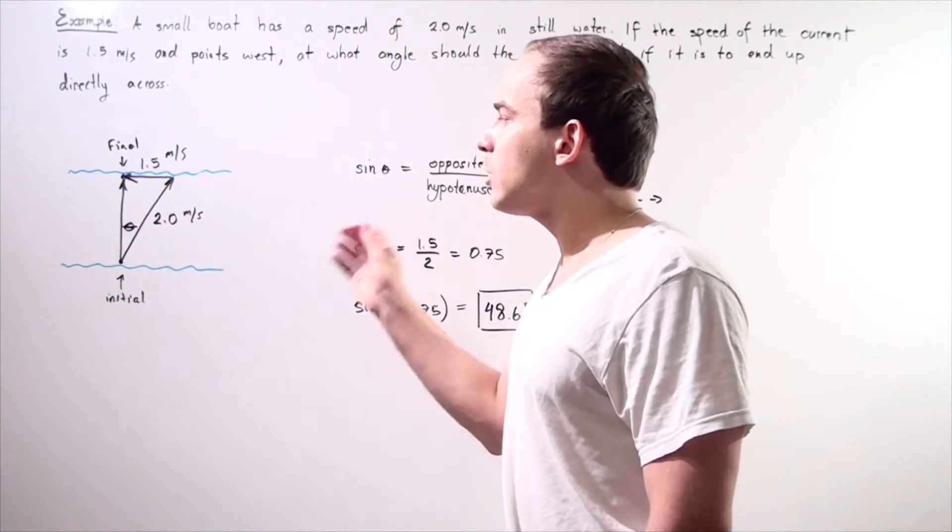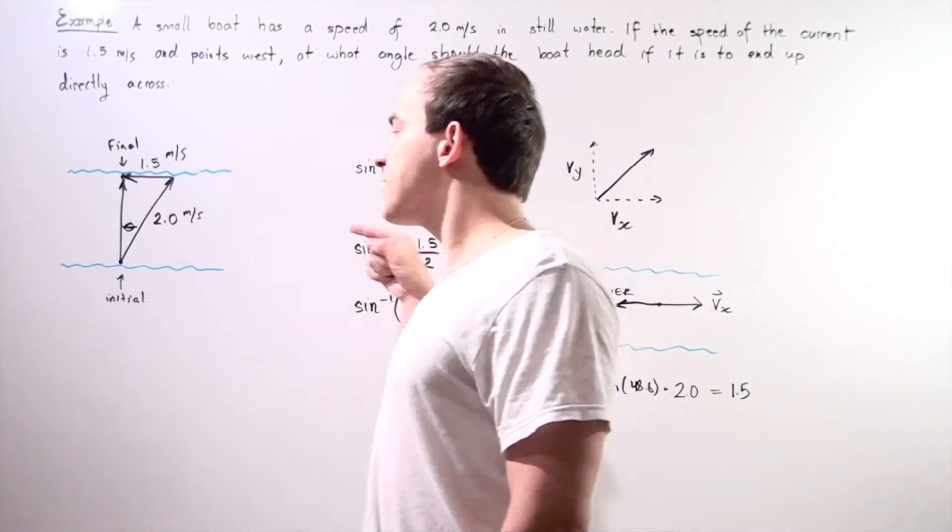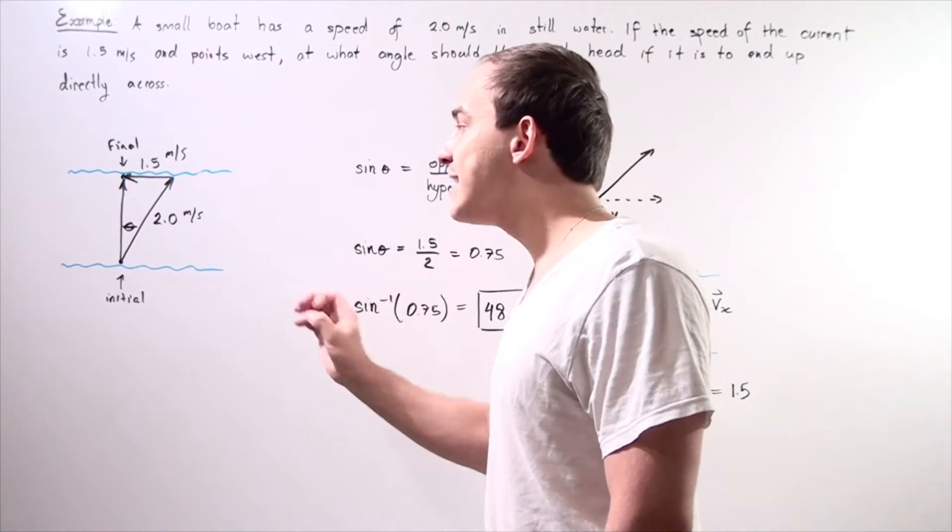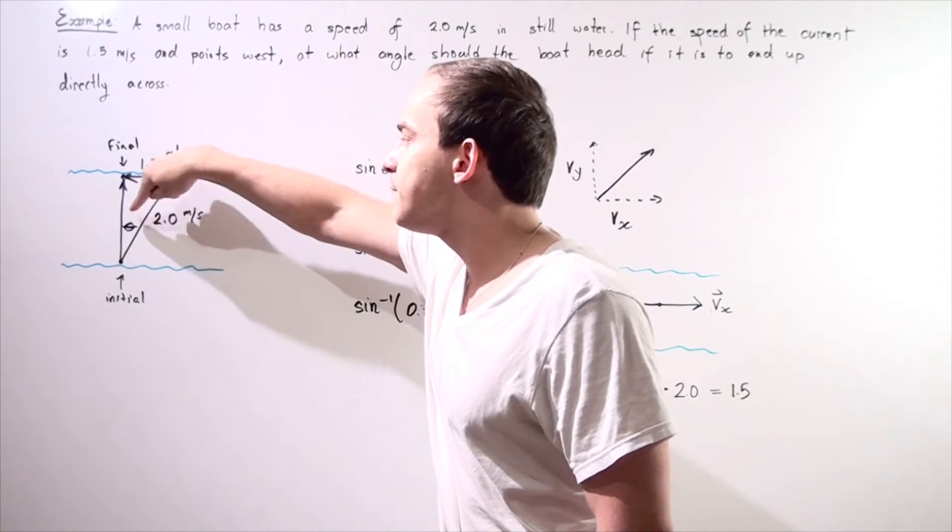We want to draw our vector diagram. If we have a current pointing this way, that means our boat should actually head slightly this way at some angle theta that we want to find.